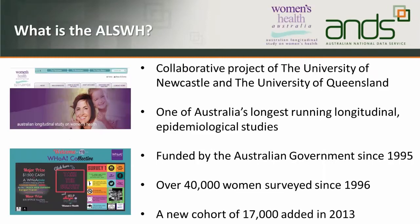So what is the ALSWH study? It's a collaborative project from the two universities of Newcastle and Queensland, and the two universities are related to keeping the sensitive data, which I'll talk about briefly. It's one of Australia's longest running longitudinal epidemiological studies, going since 1996 and ongoing. It's funded by the Australian Government. We started off with over 40,000 women, and a few years ago we got a new cohort of 17,000 women.